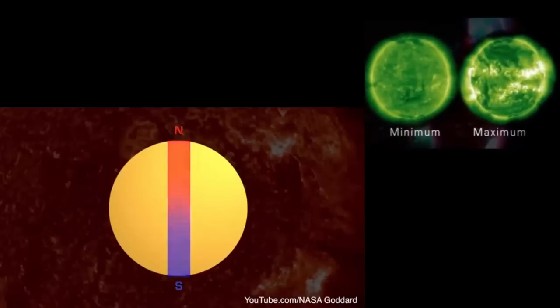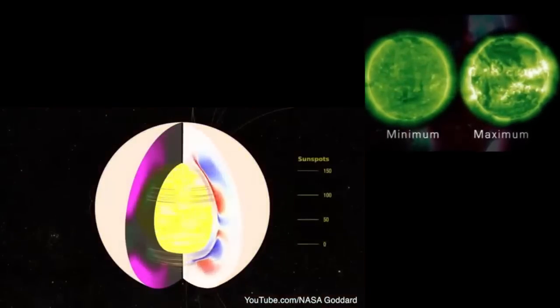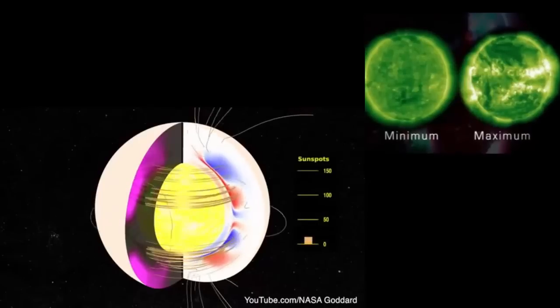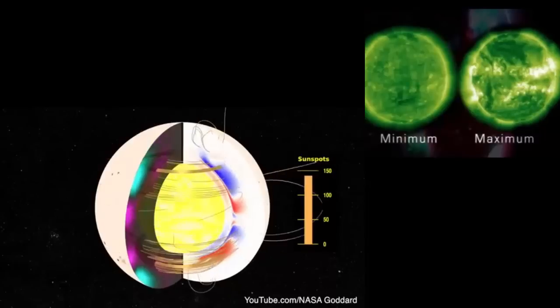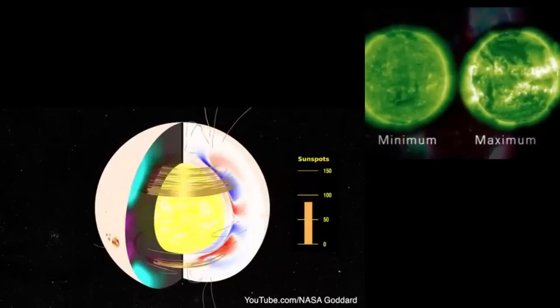The flip is due to the complex movement of magnetic fields inside the Sun that are constantly stretching, twisting, and crossing as solar material bubbles up from the Sun's core. But the exact pattern of movements is not yet mapped out.